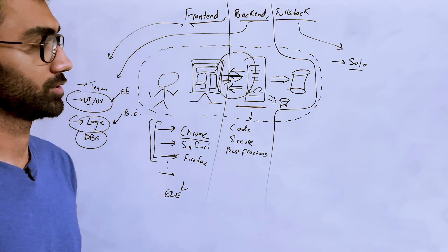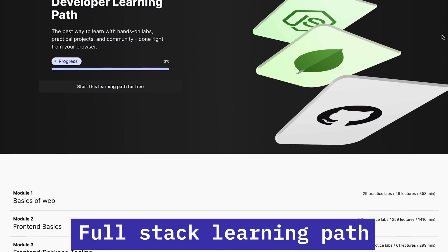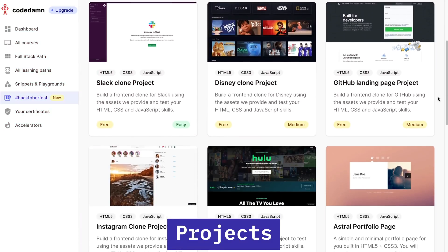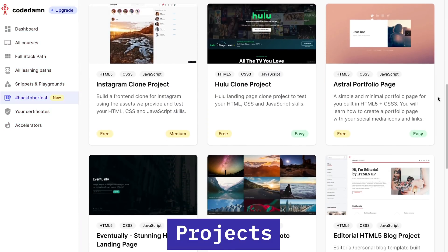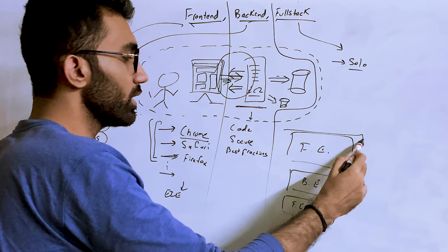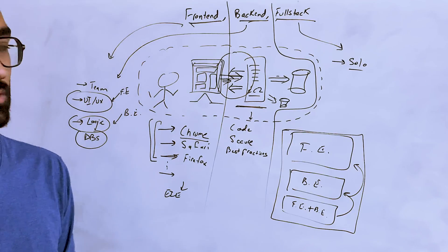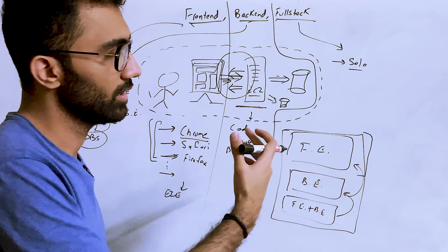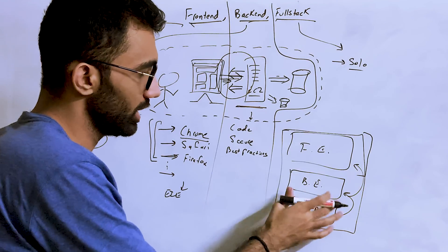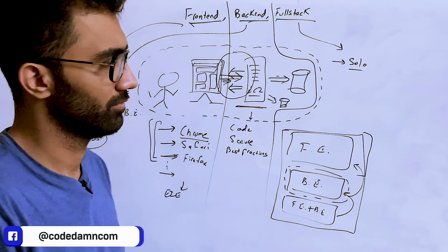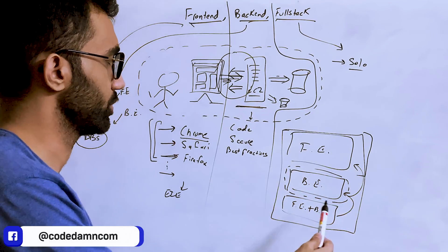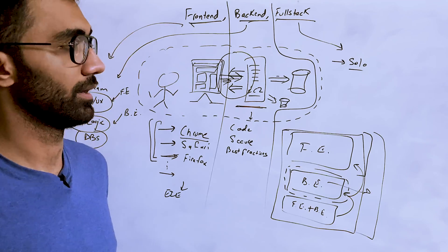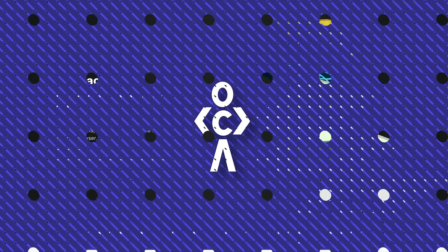For example, CodeDam's full stack learning path covers a lot of front-end in the initial modules, then a lot of back-end, plus projects that intermix both. The goal is to make you a full stack developer, but you could also just do the front-end portion and apply for front-end jobs, or just do the back-end portion — you don't need to know CSS for back-end development. If you're a solo fighter, learn everything and become a full stack developer.